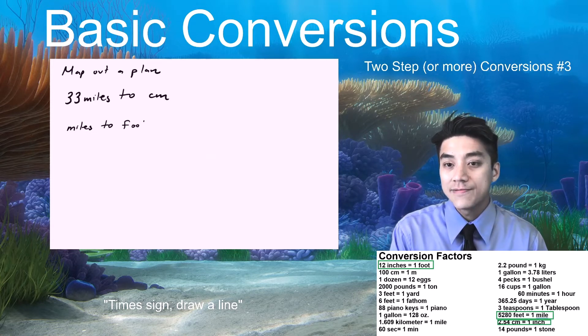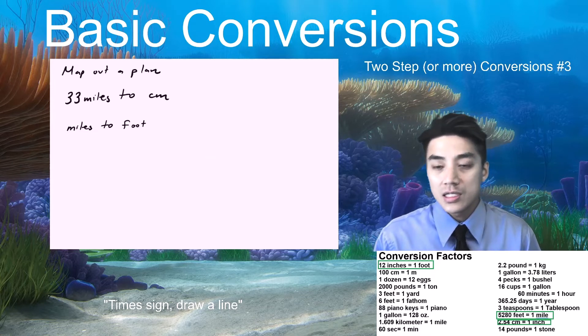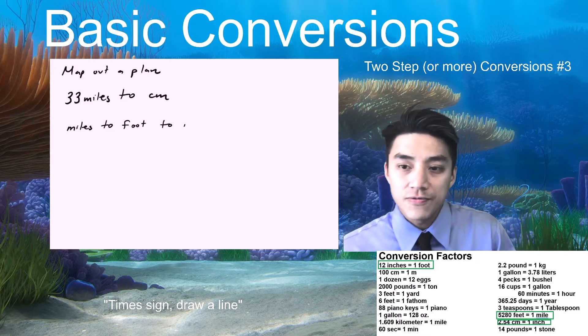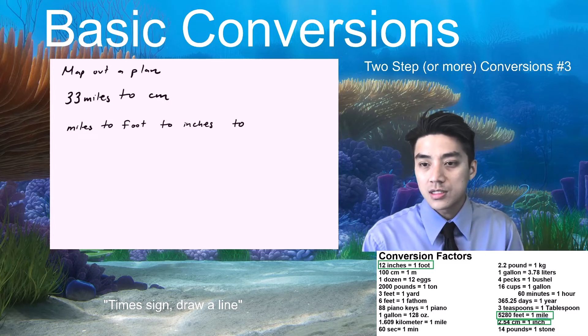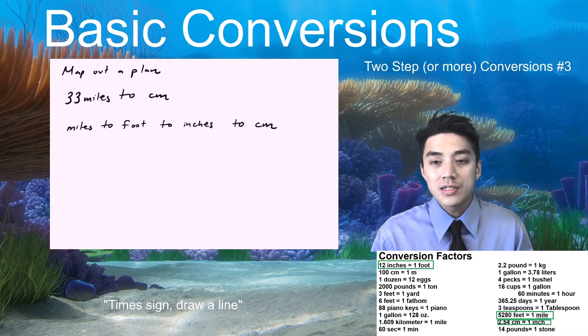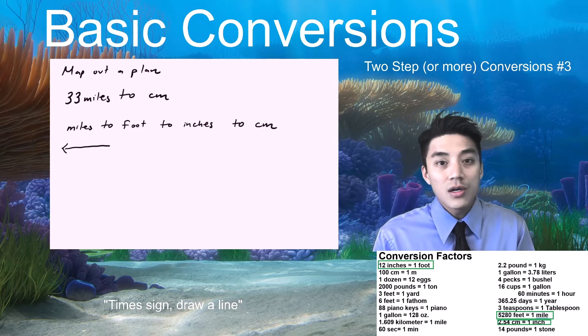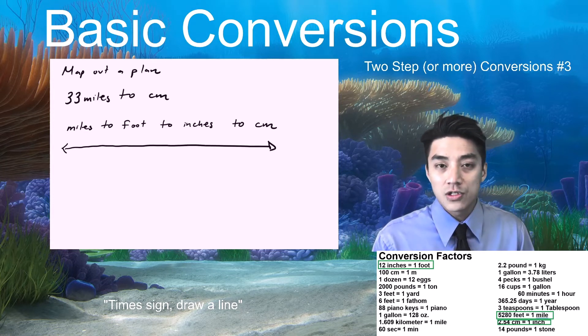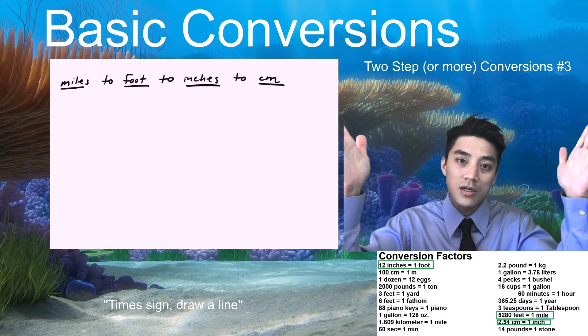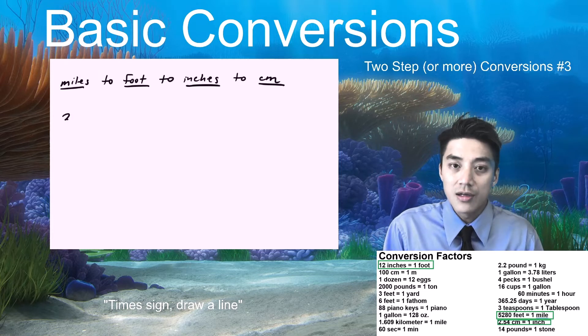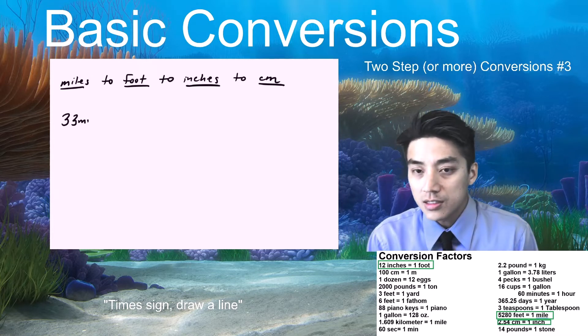Okay, so let's first map out a plan. We're going to go from miles to foot, probably. That seems to make sense. And then foot to inches. And then finally inches to centimeters. Okay, and the reason why you have to do this is because no one knows off the top of their head the conversion factor between miles to centimeters in one step. You can't do that. So basically, you're going from a really big unit, like miles, and you're going to narrow it down to centimeters.